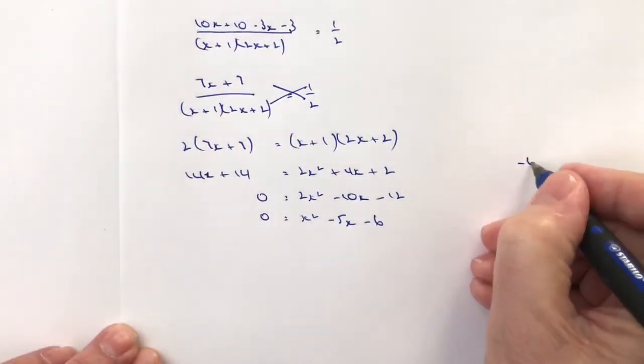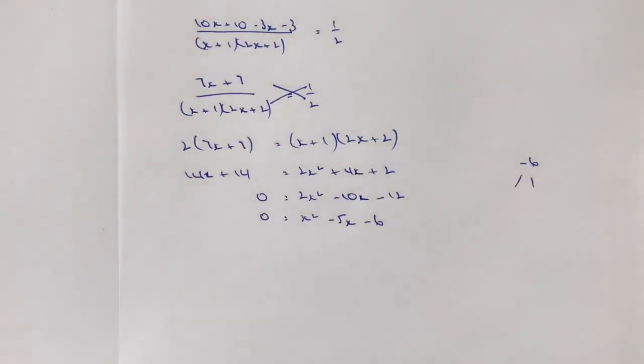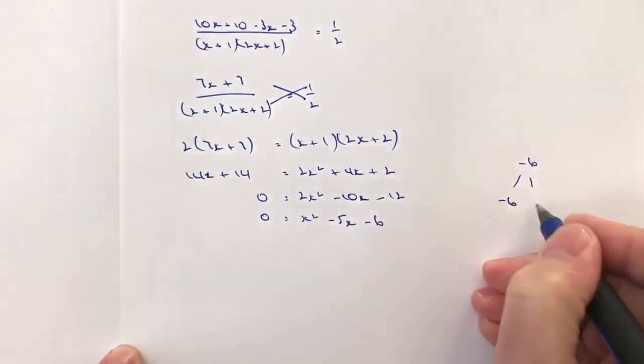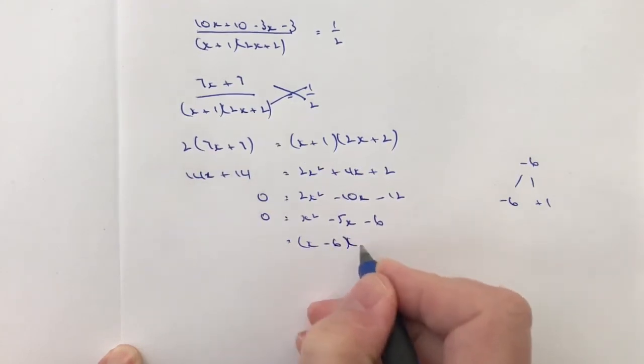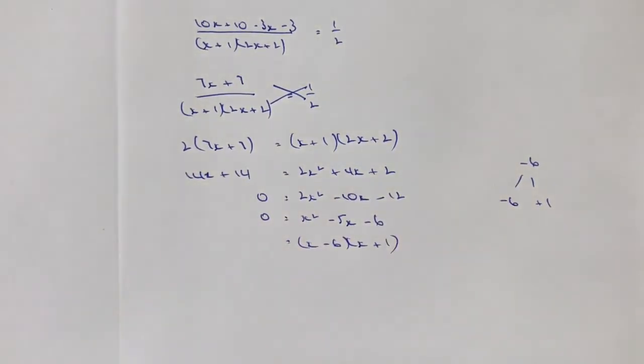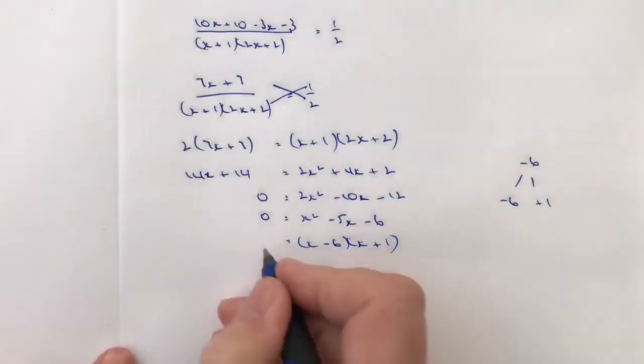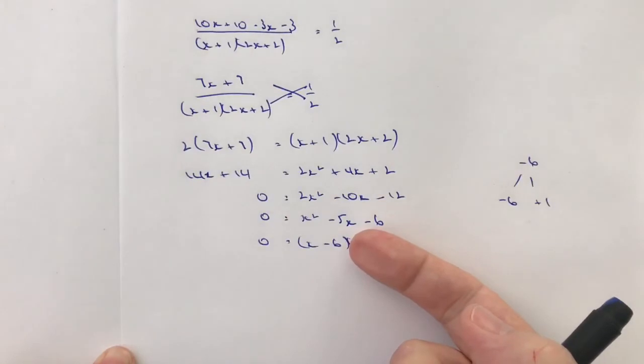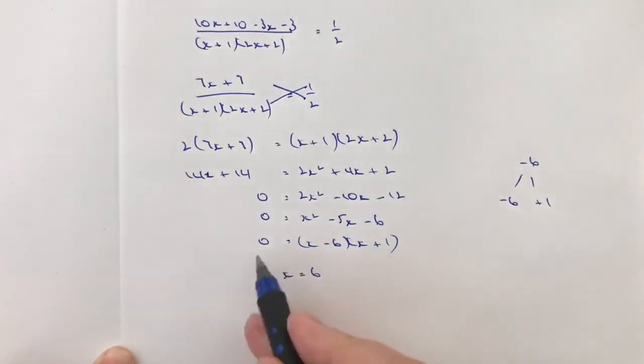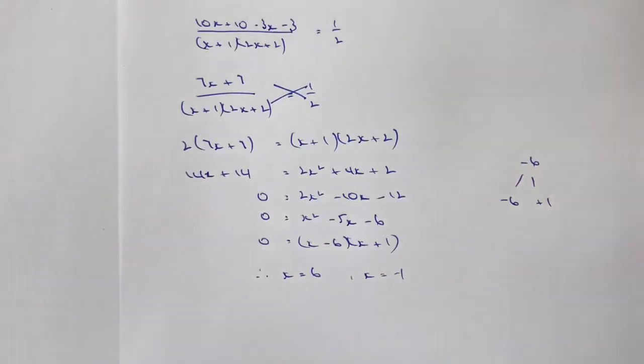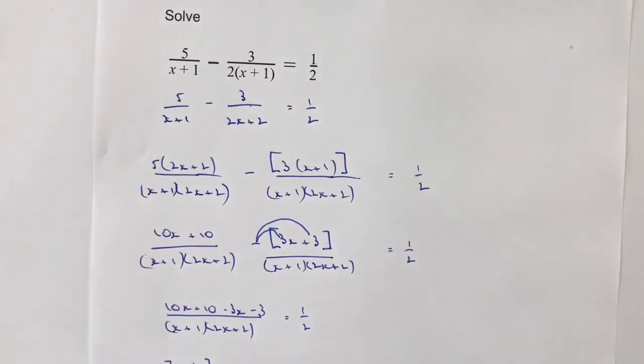And then really I just need to factorise that. So if I have minus 6, the two numbers that multiply together to make minus 6 and add together to make minus 5 are minus 6 and plus 1. So I can rewrite this as a double bracket of x minus 6 and x plus 1, which means my value of x is either going to be when x minus 6 equals 0, I've got therefore x equals 6 or when x plus 1 equals 0, I've got x equals minus 1.